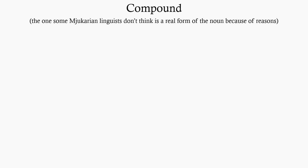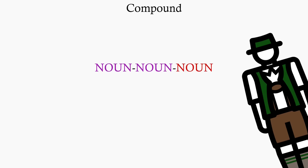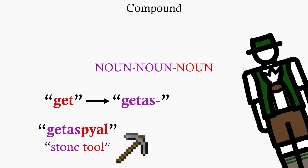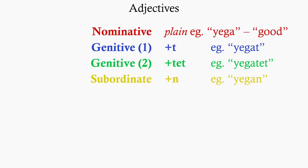Finally, there's a compound form which is used to string nouns to get the German style, like get becoming gettas to make words like gettaspial, stone tool. Adjectives are declined according to the noun they refer to with these endings. They can also be turned into adverbs by adding re.